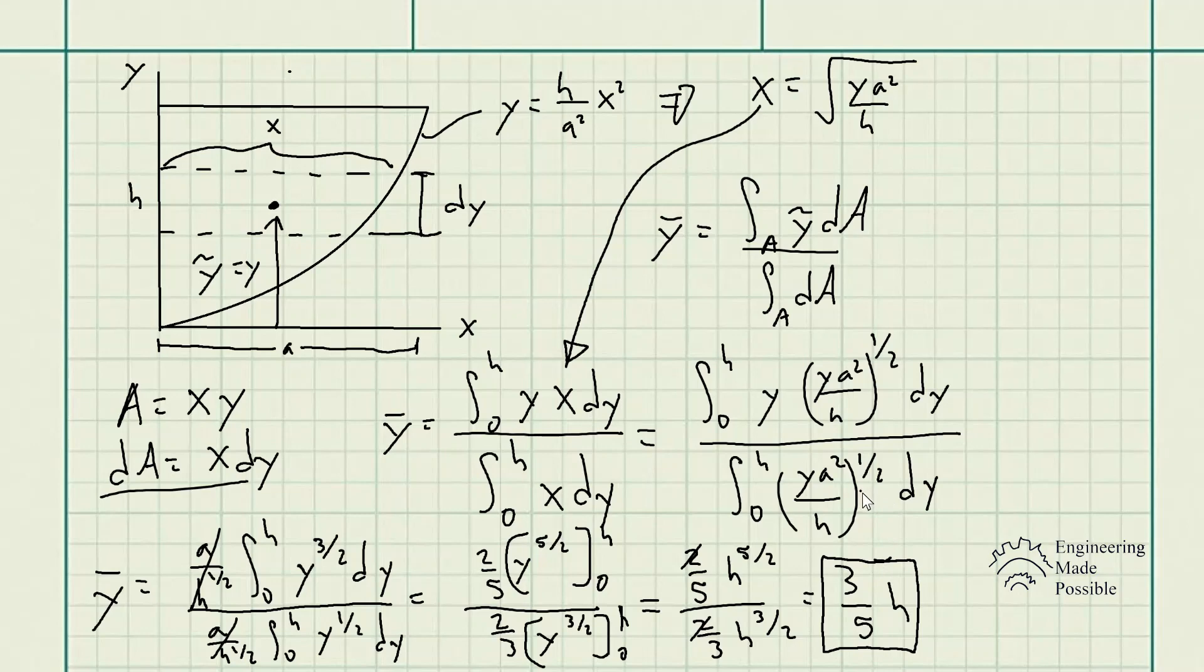So now we have the x-bar and the y-bar. So now we're able to actually locate where the centroid of this area is. And this is how you solve for the centroids of areas. And it's the same if we're talking about cross-section of a beam. Then you would go about it the same way by using the formulas that were shown in the beginning.